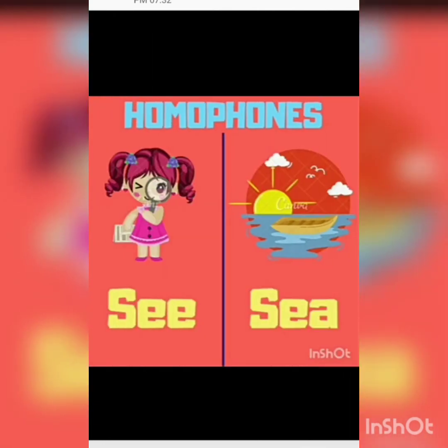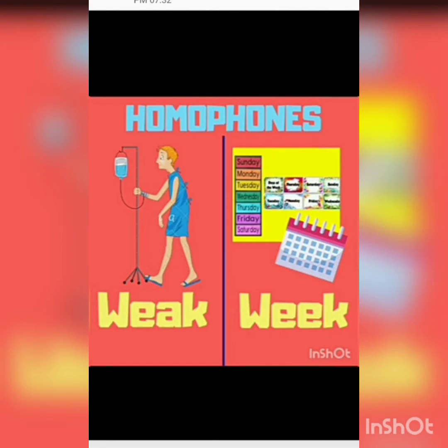Next is 'see' and 'sea'. S-E-E means to look at things, and S-E-A means sea — a large body of salty water, because seas are salty water. Next is 'weak' and 'week'. W-E-A-K, weak, means how we feel when we are sick, and W-E-E-K means seven days of a week, which begins from Sunday.